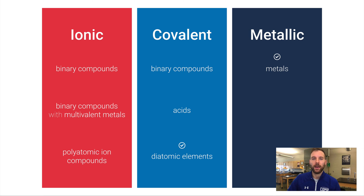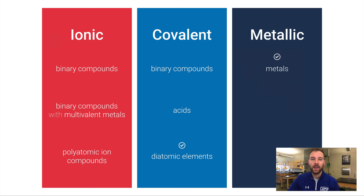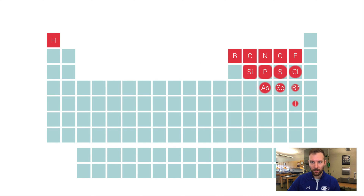In the next video we're going to look at how to write ionic formulas. Before we get into naming, we need to make sure we can write correct formulas for ionic substances. Before we continue, I want to talk about something that will pop up quite a bit in this unit. Both ionic and covalent categories contain non-metals — ionic substances have a non-metal, and covalent substances have all non-metals.